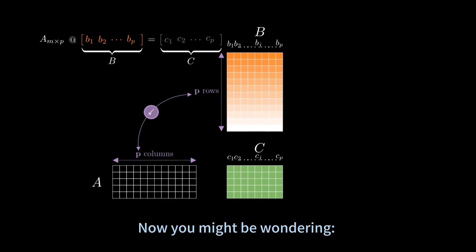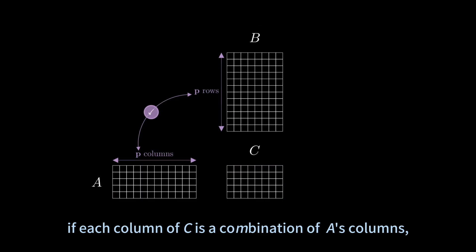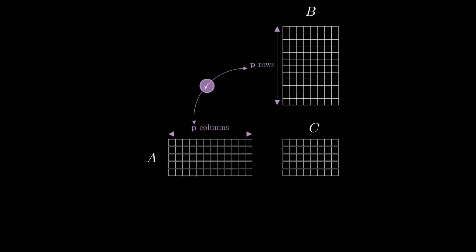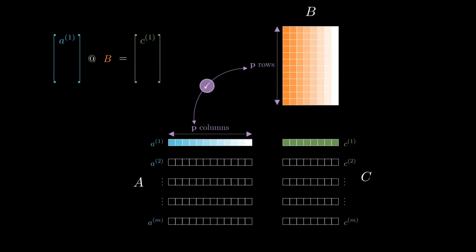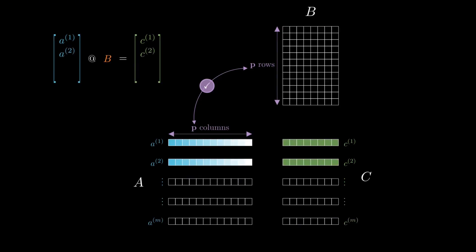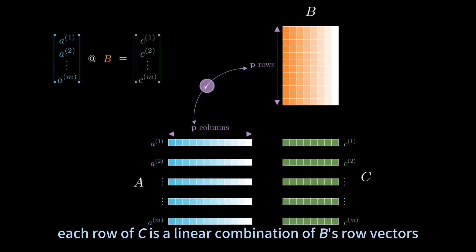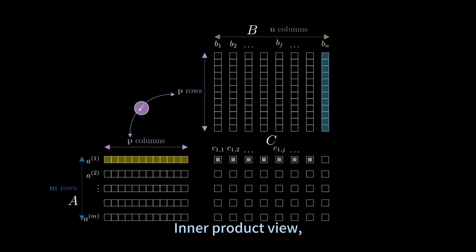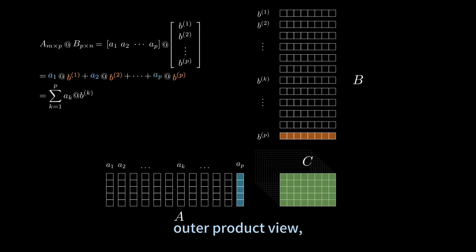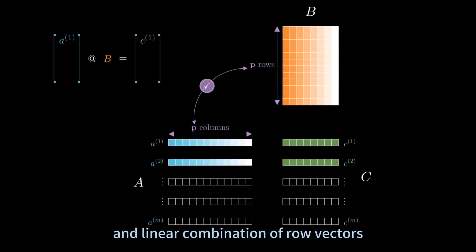Now you might be wondering: if each column of matrix C is a combination of matrix A's columns, can we also interpret matrix C in terms of matrix B? The answer is yes. For matrix A times matrix B equals C, each row of C is a linear combination of B's row vectors — giving us the inner product view, outer product view, linear combination of column vectors, and linear combination of row vectors.